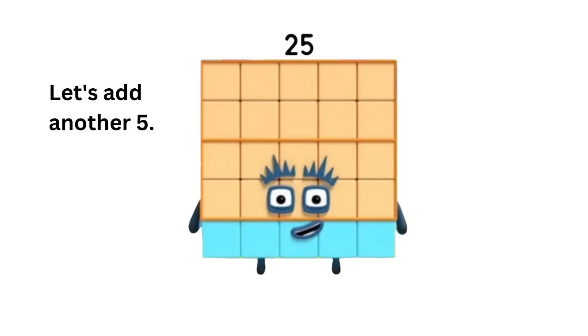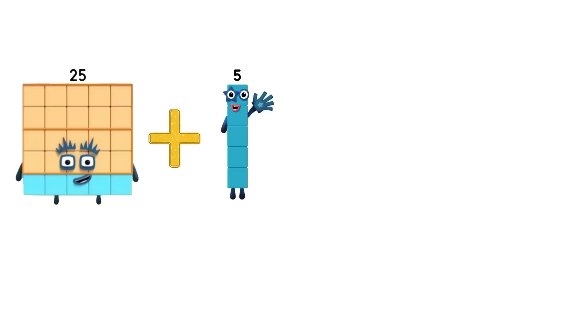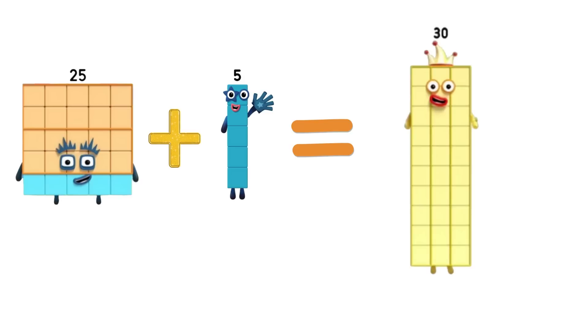Let's add another five. 25 plus five equals 30.